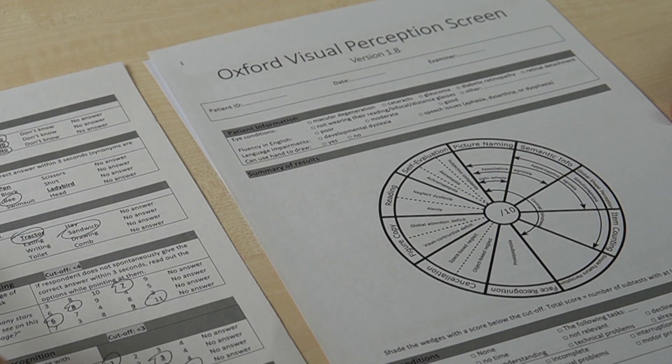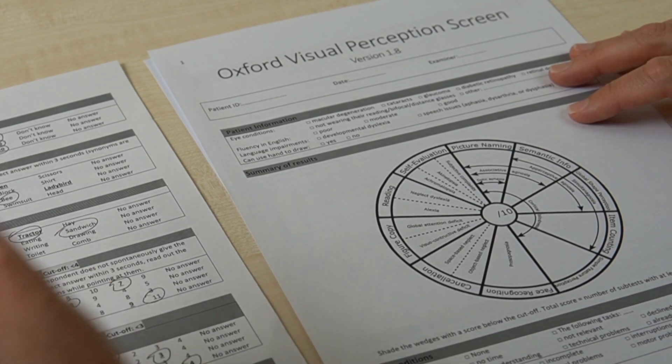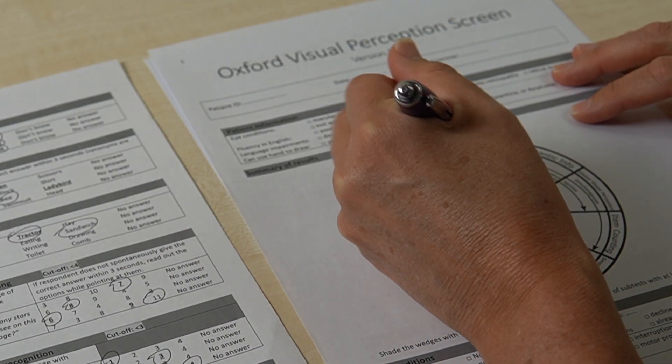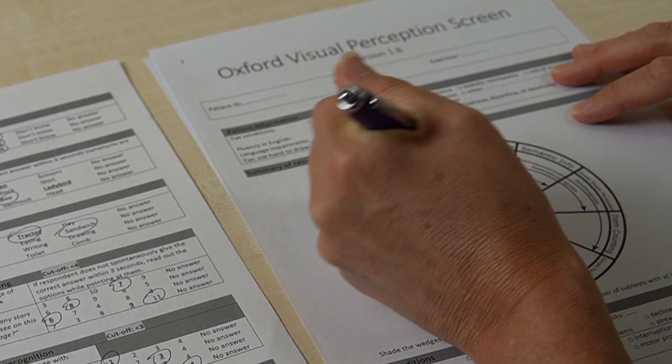Okay, so now you've completed OxVPS, did all the scoring, you've shaded your wedges. Now, how do we interpret all those results? Well, on the wheel, you have the names of the tasks on the outside. Inside the wheel are the names of loads of different conditions. You can see that for some tasks, like the face recognition task, there's only one condition related to that, prosopagnosia. Prosopagnosia means face blindness. So if you shaded that wedge, that means that your patient likely has some signs of prosopagnosia. And you might want to look into that further with some follow-up tests, or you might want to seek further advice.